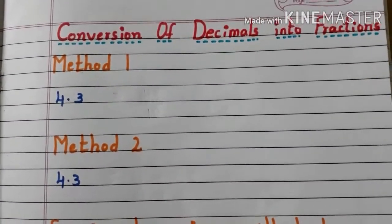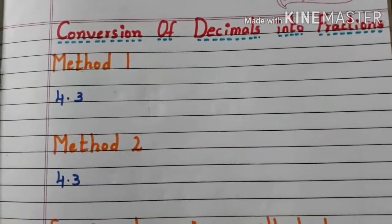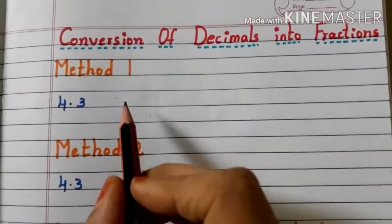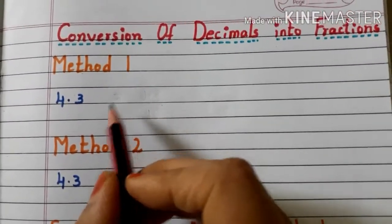There are two ways to convert decimals into fractions. Let us see Method 1.